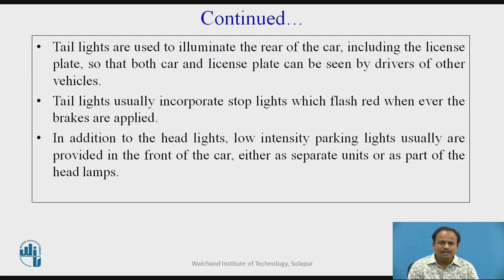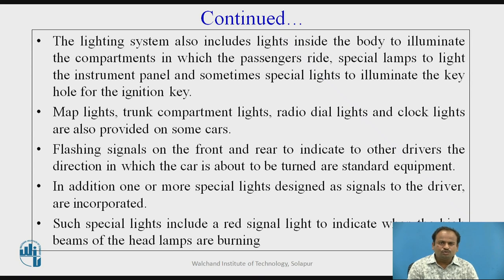Tail lights are used to illuminate the rear of the car including the license plate, so that both the car and license plate can be seen by drivers of other vehicles. Tail lights usually incorporate stop lights which flash red whenever the brakes are applied. In addition to the headlights, low intensity parking lights are usually provided at the front of the car, either as separate units or as part of the headlamps. The lighting system also includes lights inside the body to illuminate the compartments in which the passenger rides, special lamps to light the instrument panel, and sometimes special lights to illuminate the keyhole for the ignition key.